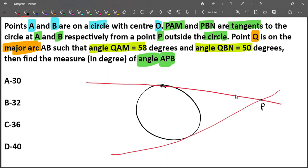This will be A and this will be B. Here is PAM and here is PBN. Next, point Q is on the major arc, so this is the major arc, and here is point Q.